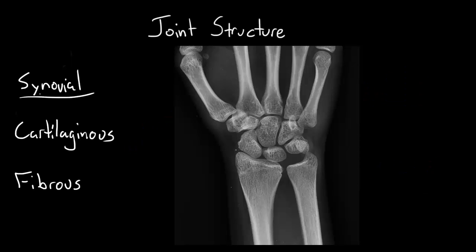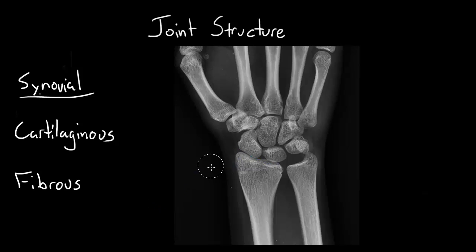Another type of synovial joint is a planar or gliding joint. These allow motion in two planes. An example here would be your wrist. Here is an x-ray of the patient's wrist. You can see the articulation between the radius and the wrist bones themselves, called the radiocarpal joint, and it allows sliding along this plane.